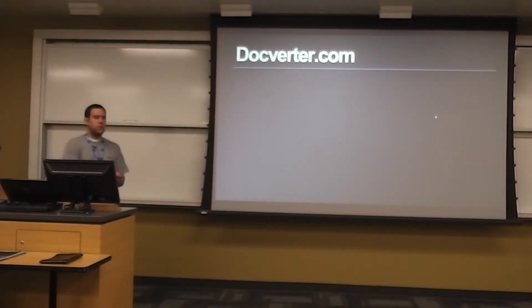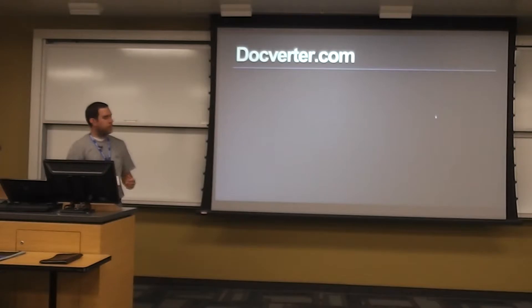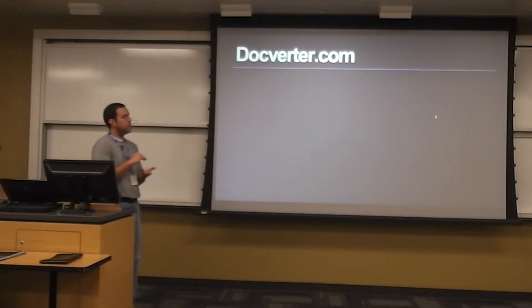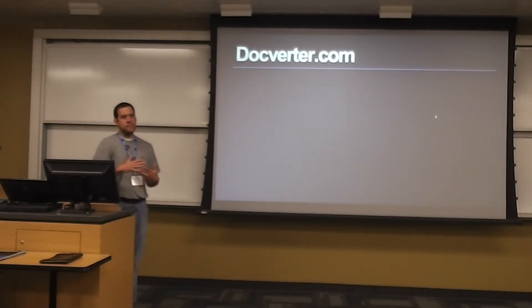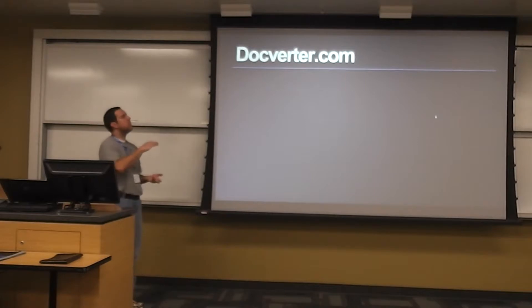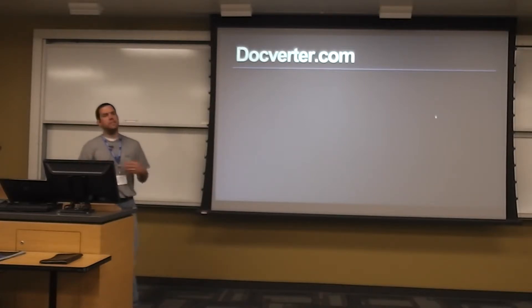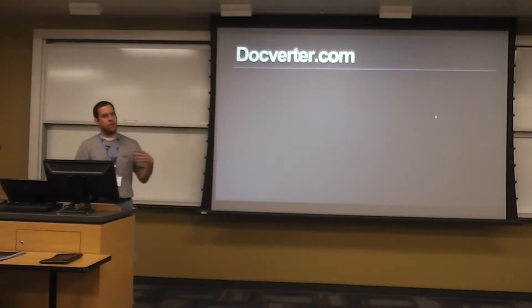Docverter.com — once you've written the book, typically what you'll end up doing is splitting your book so each chapter is in its own file. You'll have a folder full of Markdown files, and maybe another folder with images if you're including images in your book.